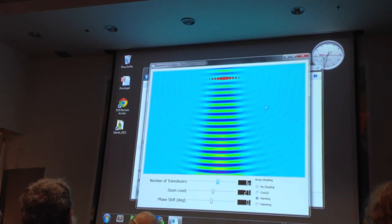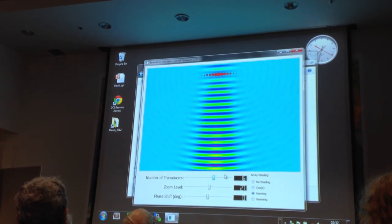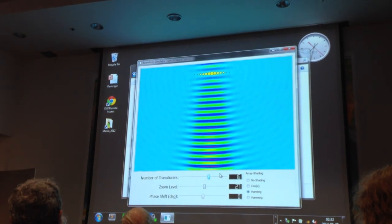And look at what happened to the side lobes. They disappeared. All that's left is the single beam that we wanted going in the direction that we want it to go, right down the center.